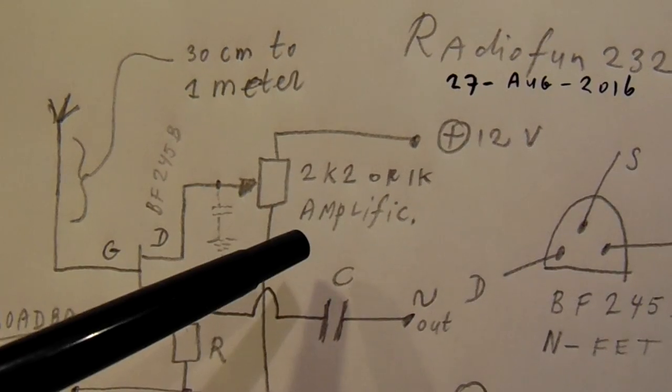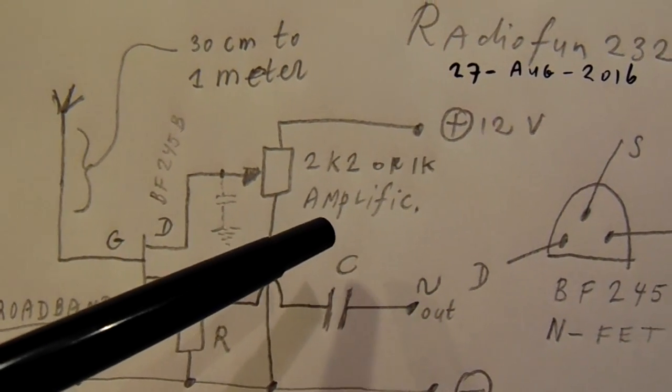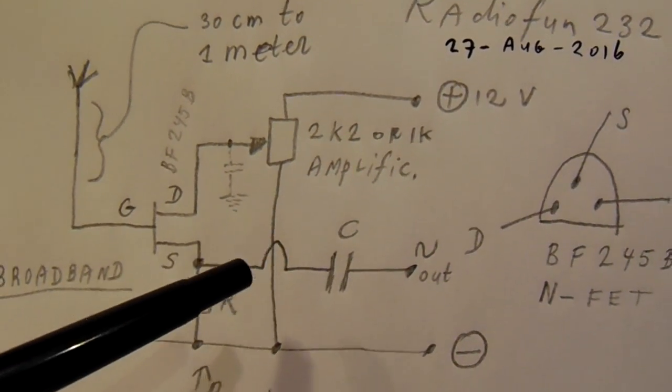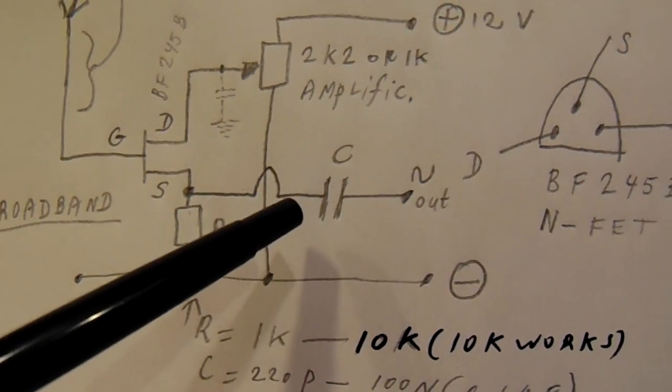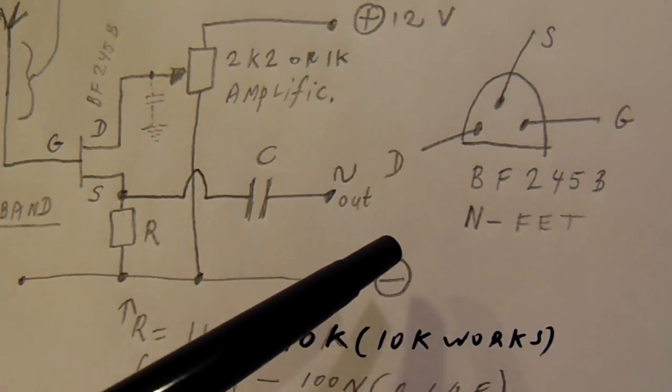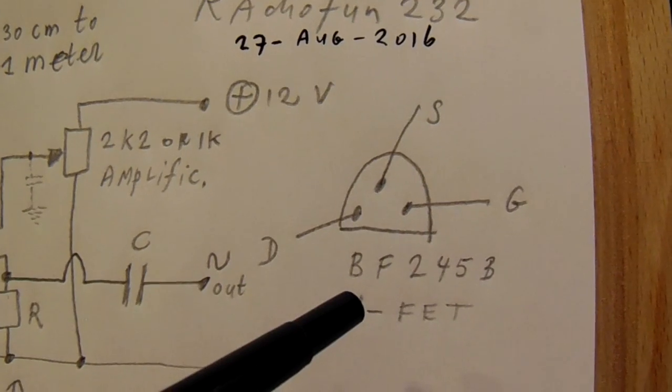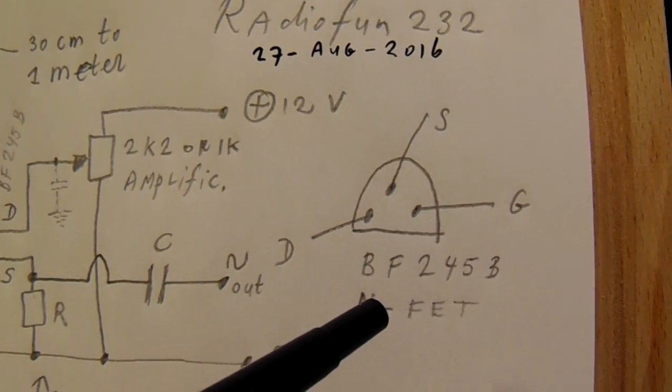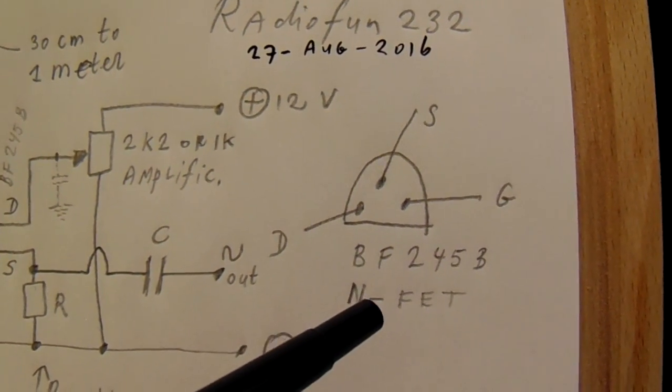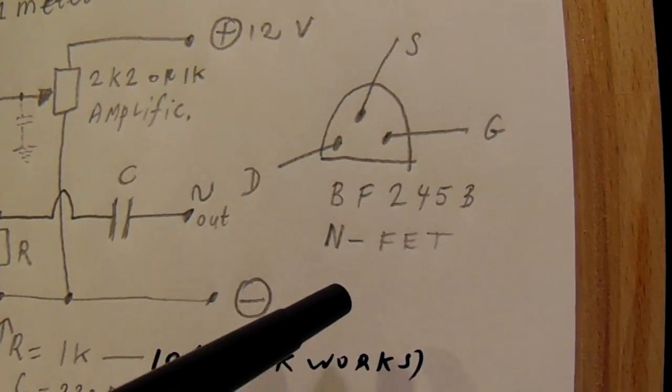The 2k2 potentiometer or 1k sets the amplification and you can take out the signal here to your radio. This is by the way the pin connections from the field effect transistor. It's an N-FET.